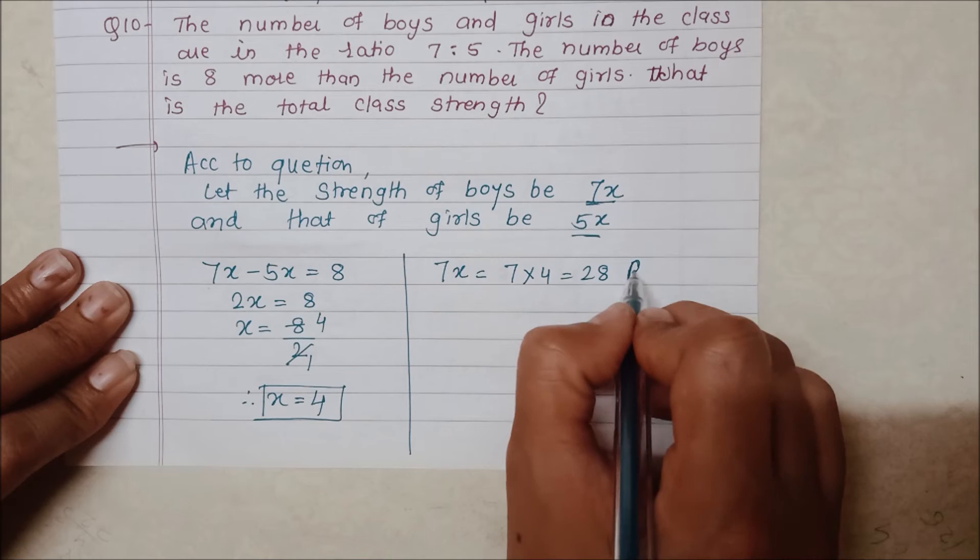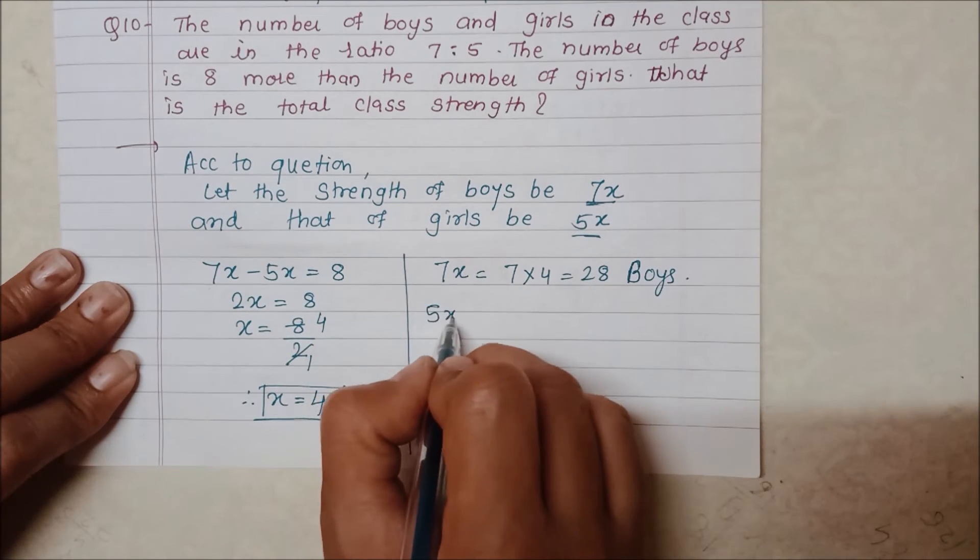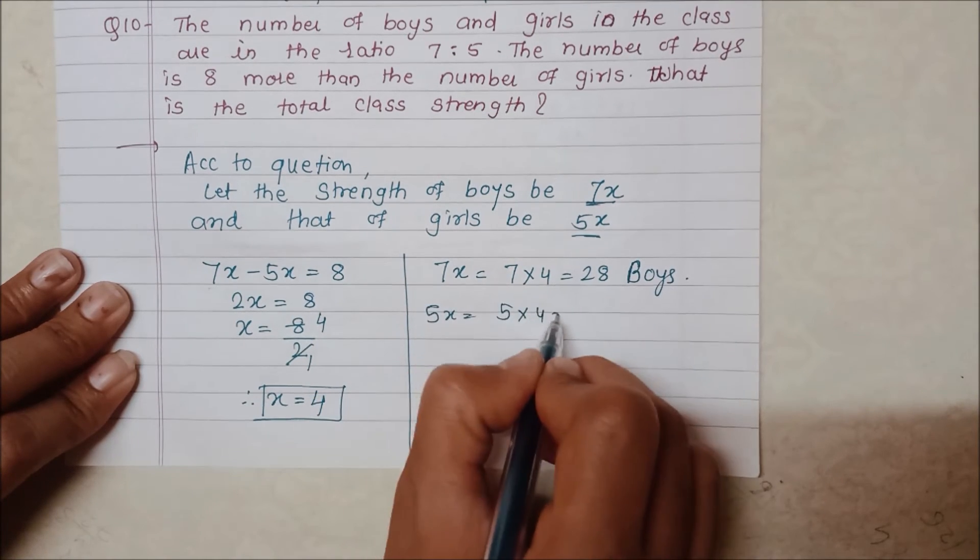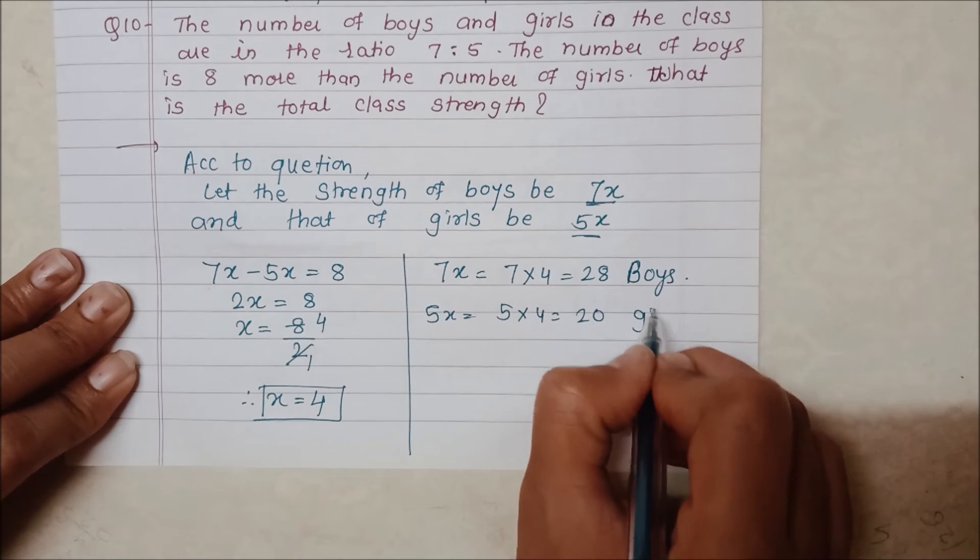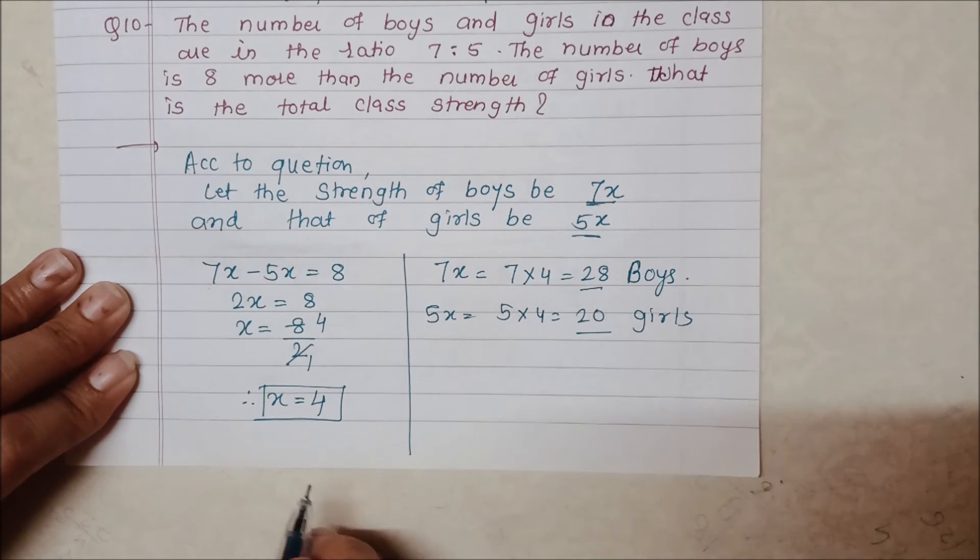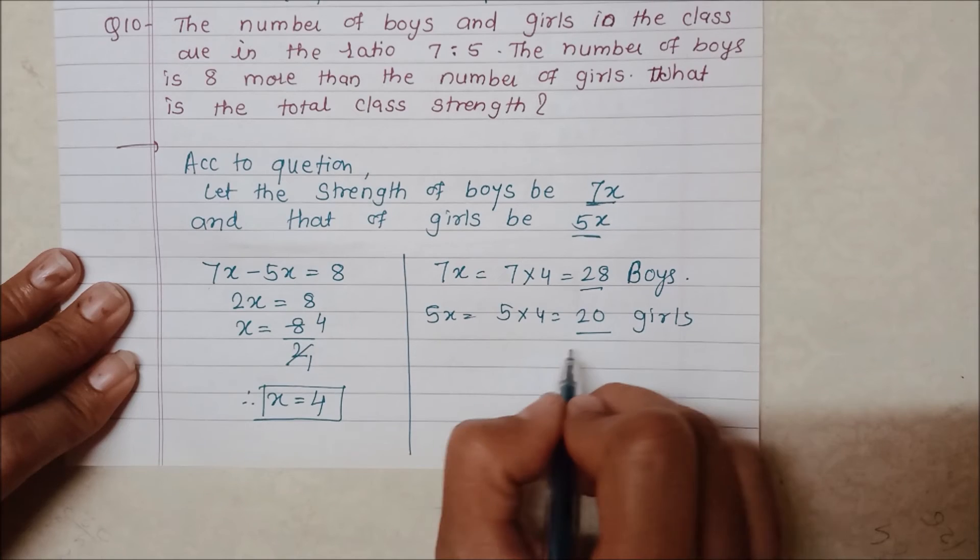This is for girls. 5x is equal to 5 into 4, that is 20 girls. So 28 are boys and 20 are girls. And we will add them.